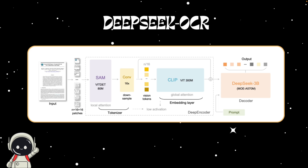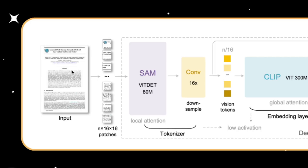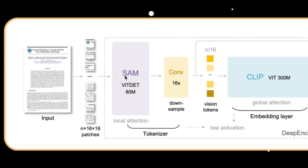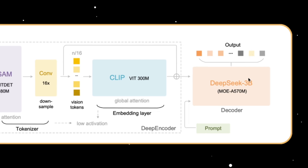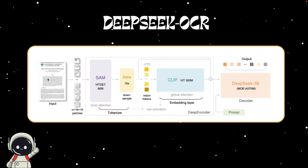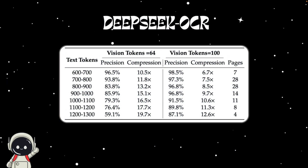To understand it more simply: the process starts with an input, usually a PDF, which is broken down into 16×16 patches. These are processed through SAM to understand local details like what language is being used. Then it's further down-sampled and the vision tokens are put into CLIP, which handles the global semantic knowledge — the broader layout and meaning. Then it's decoded and the user is given the output. The more information you put in, the more you trade off accuracy for speed, and image clarity matters since noise reduces accuracy.